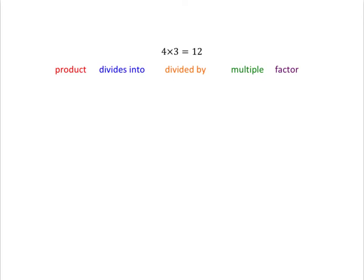We're going to start looking at factors and multiples, but before we do that, we just need to make sure we all understand the words we will use in this section. If you look here, I have got something you probably know very well — that 4 times 3 is 12. And I've got some words: product, divides into, divided by, multiple, and factor. These are the words I want to check that we know what they mean.